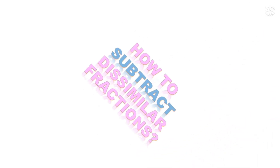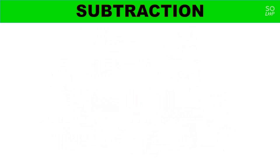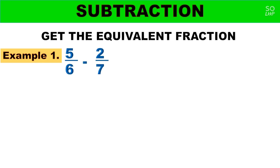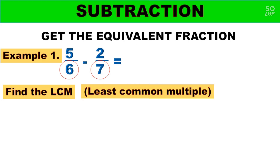Now I will teach you how to subtract dissimilar fractions — how to subtract fractions with different denominators. Example number 1: 5 over 6 minus 2 over 7. The first step is to get the equivalent fraction. Our denominators are 6 and 7 — different denominators — so we find the LCM, the least common multiple.